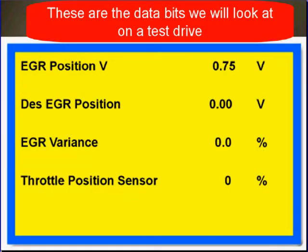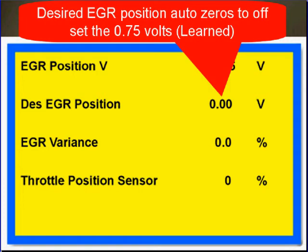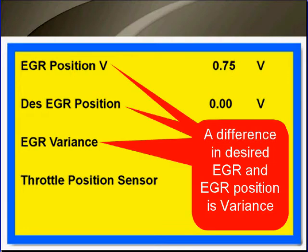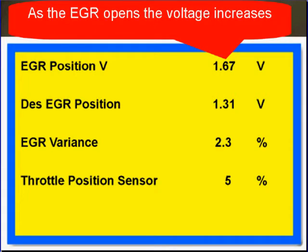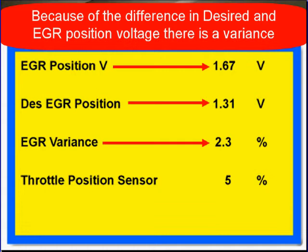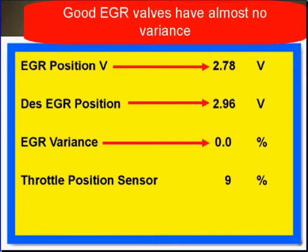These are the data bits we're going to view during a test drive. Note that the EGR position voltage is within specification at 0.7 volts. The desired EGR position is zero, and that's because it auto-zeroes to offset that 0.7 volts. A difference between desired EGR position and actual EGR position is called variance. Small variances indicate a slight problem. Large variance indicates a major problem. A good EGR valve will have almost no variance.